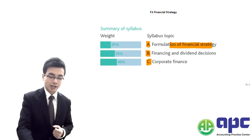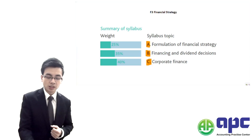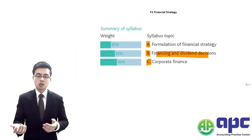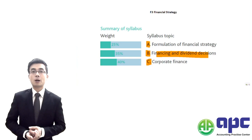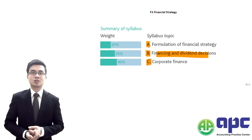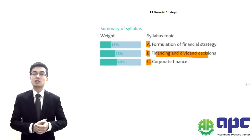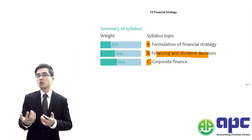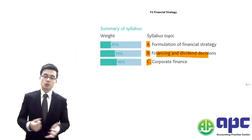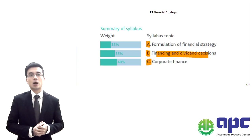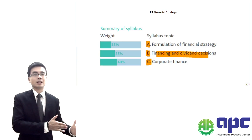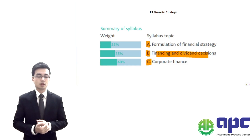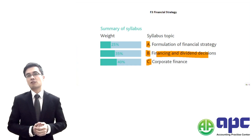Section B looks at detailed financing as well as dividend decisions. Section A gives just the overview, while Section B is talking about what types of financing strategies there are — particularly long-term financing related to equity. We'll cover the various ways to issue equity, the listing process, and the associated costs. We'll also discuss different dividend decisions, either from the Modigliani and Miller perspective, or from the traditional and real-life perspectives. Section B accounts for 35% of marks in the exam.